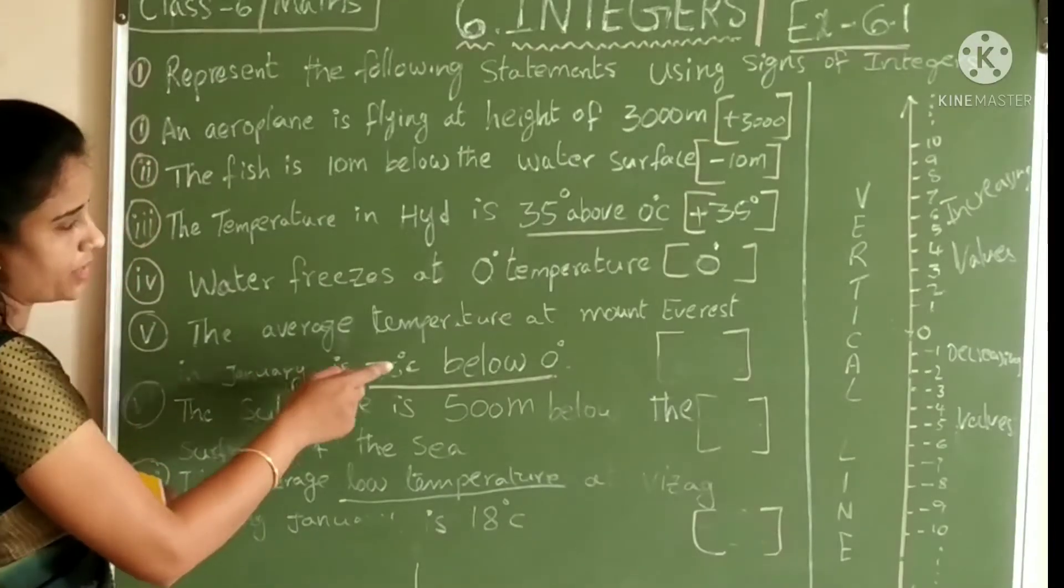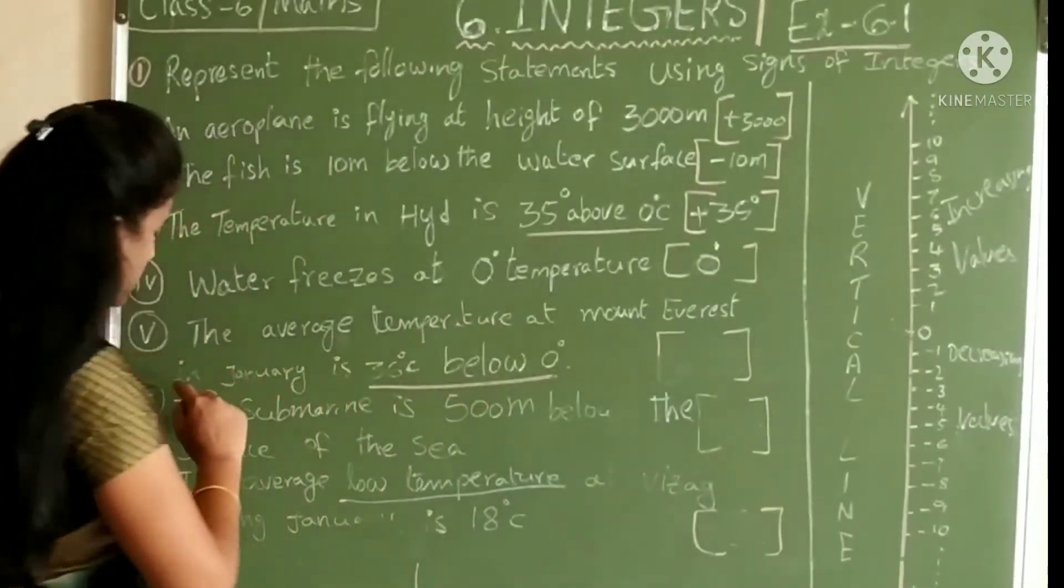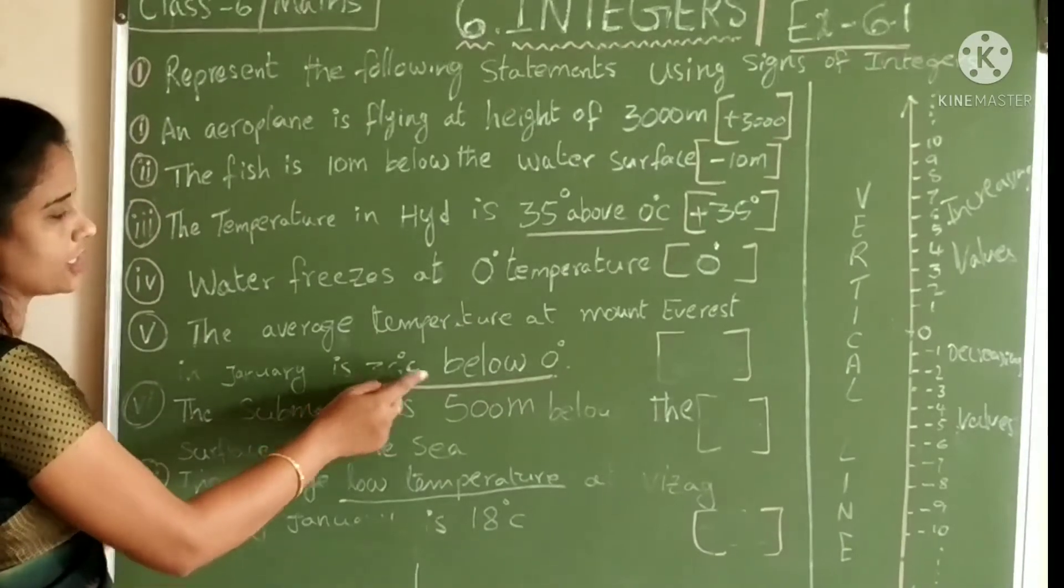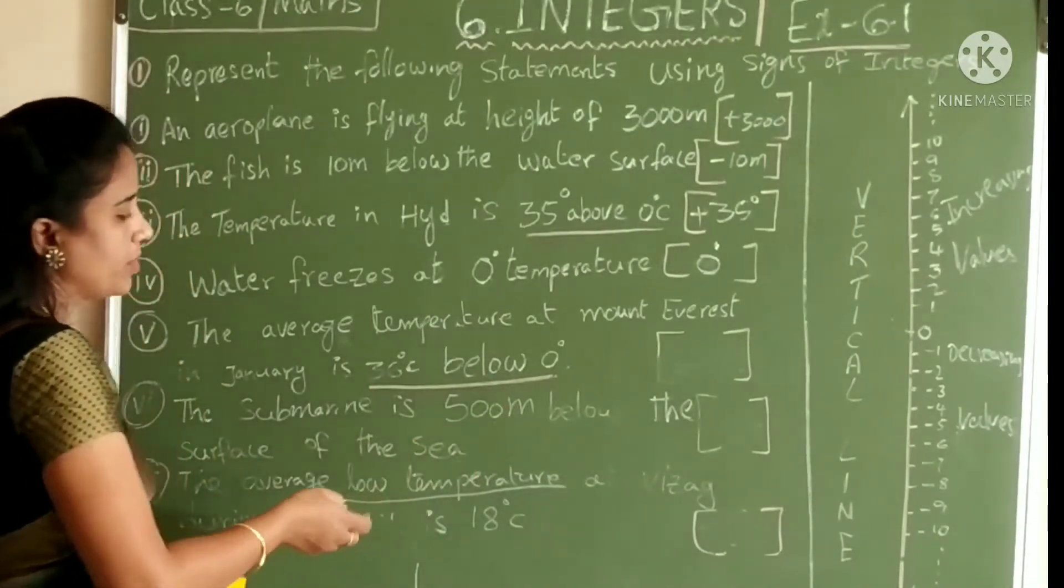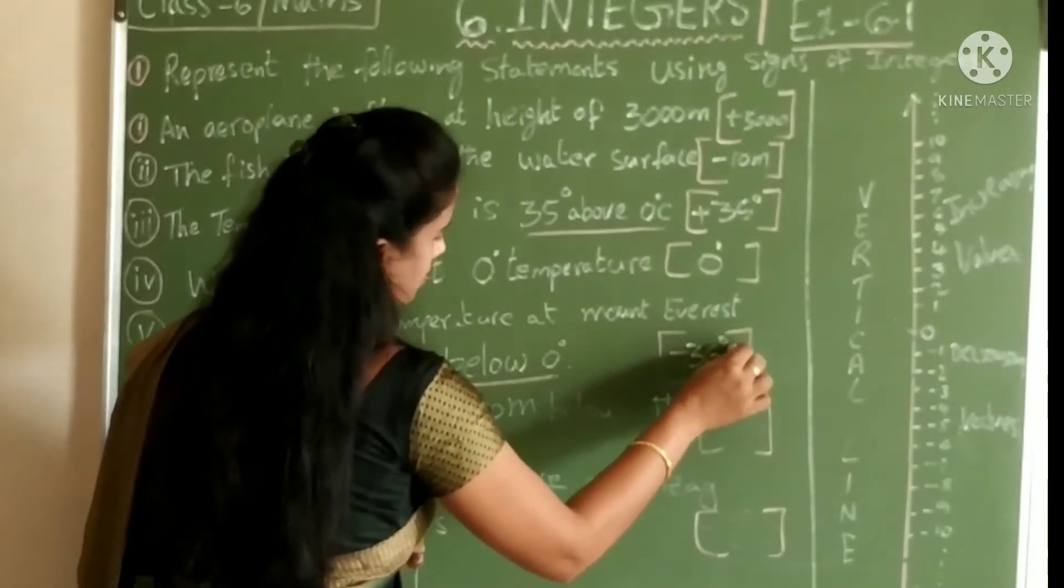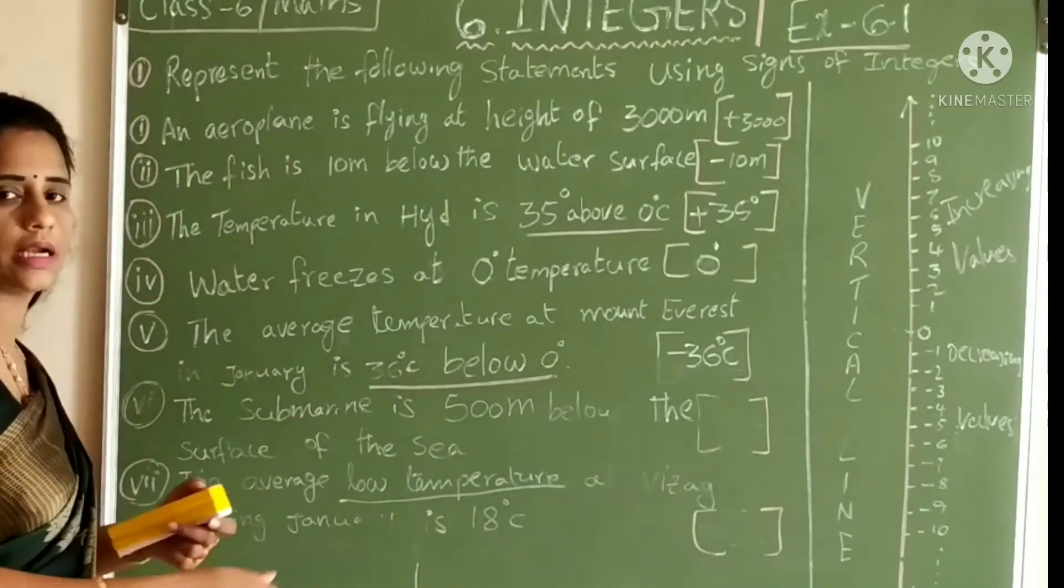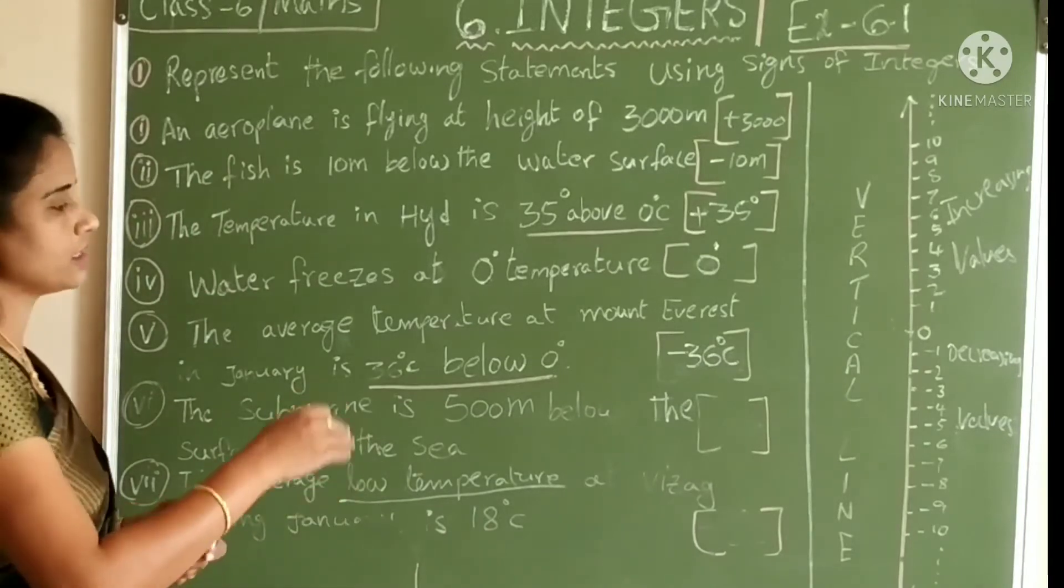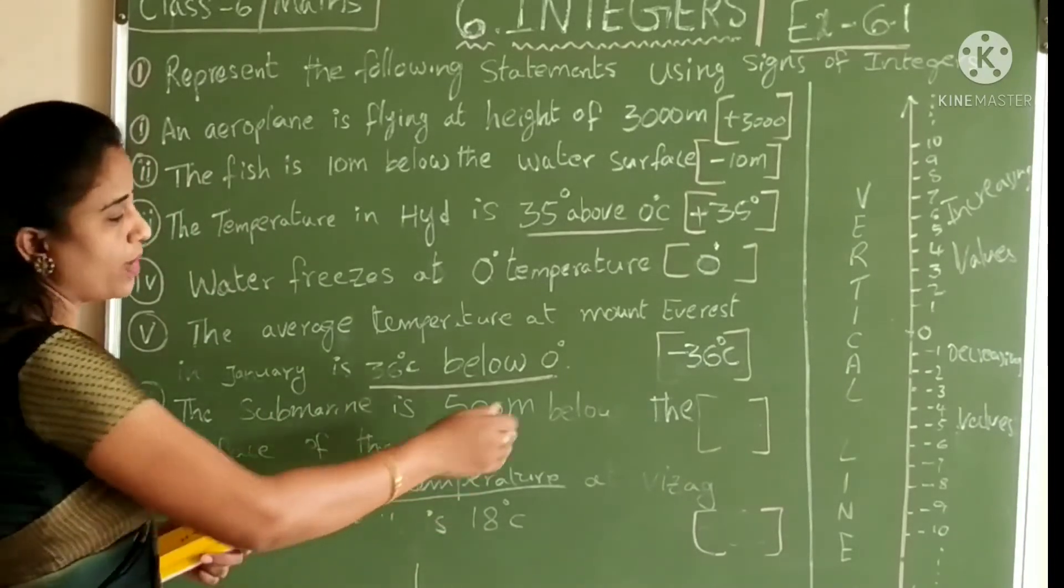The average temperature at Mount Everest in January is 36 degrees below 0 degrees. Below means minus 36 degrees Celsius. Below means it is decreasing. Temperature is decreasing. So decreasing means minus.